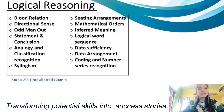The third round is logical reasoning. Topics include: Blood Relations, Directional Sense, Odd Man Out, Statement and Conclusion, Analogy, Classification, Pattern Recognition, Coding and Number Series, Seating Arrangement, Mathematical Operations, Venn Diagrams, Logical Sequence, Data Sufficiency, and Data Arrangement. In this section, you will have 20 questions and 20 minutes.